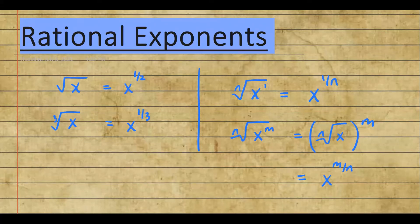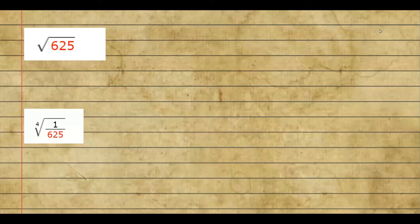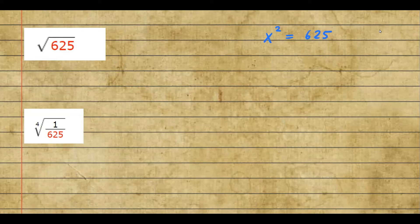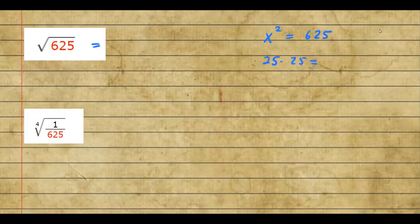Let's look at the first example: find the square root of 625. We're looking for a number x such that x squared equals 625. Going down the list, we find that 25 times 25 gives 625. So the square root of 625 is simply 25, because 25 squared is 625.